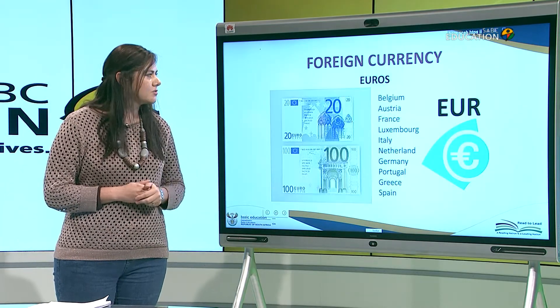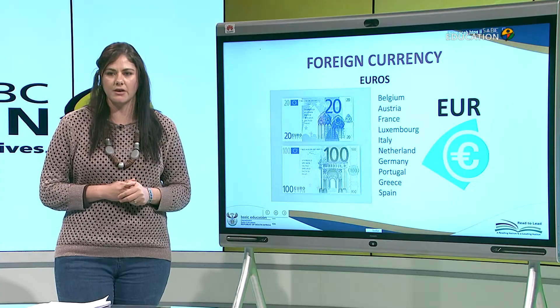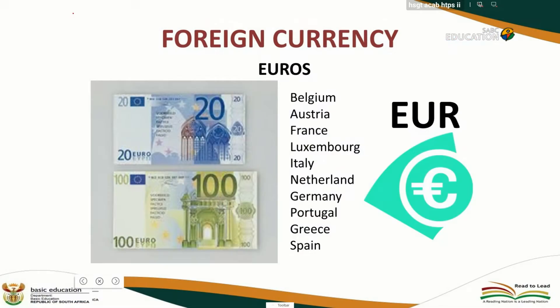The next currency is euros. The code is EUR, and since euros starts with an E, the symbol is an E with two lines through it.